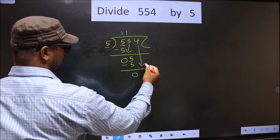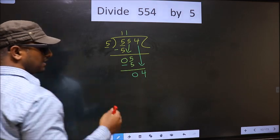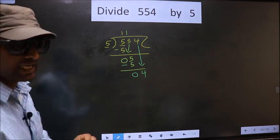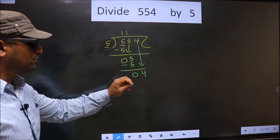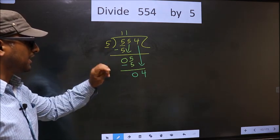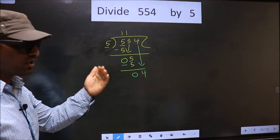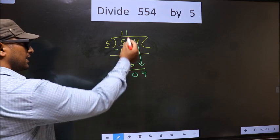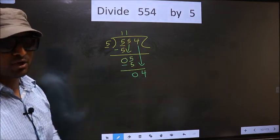Now bring down the next number, so 4 down. This is where the mistake happens. Here we have 4, and here 5. 4 is smaller than 5. So what many do is put a decimal point and take 0 here, which is wrong.